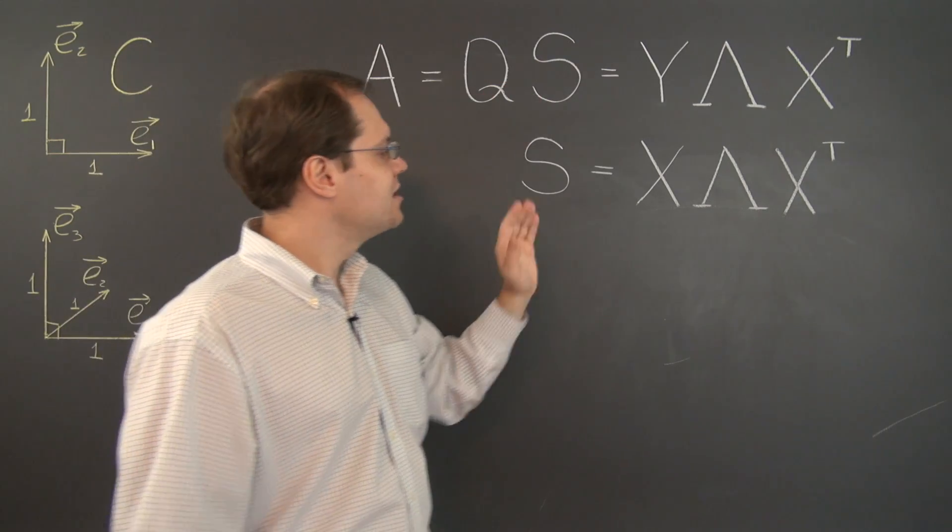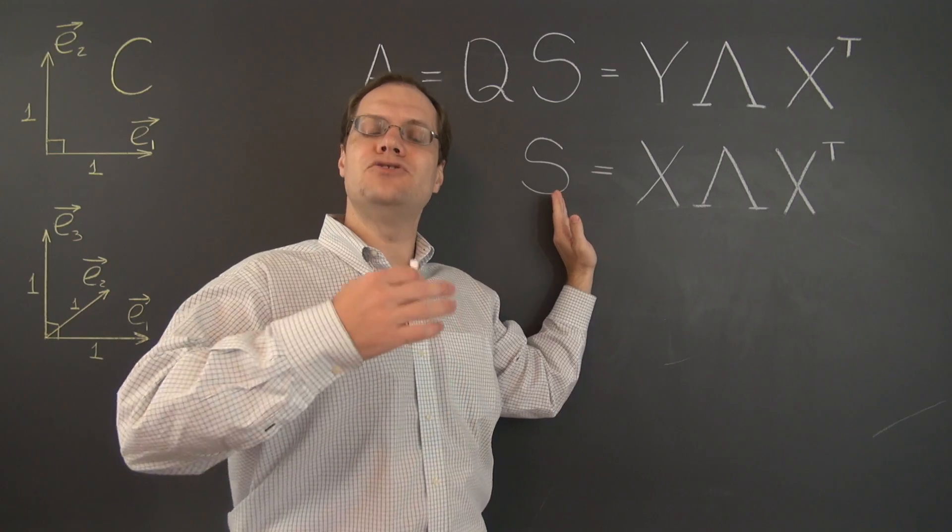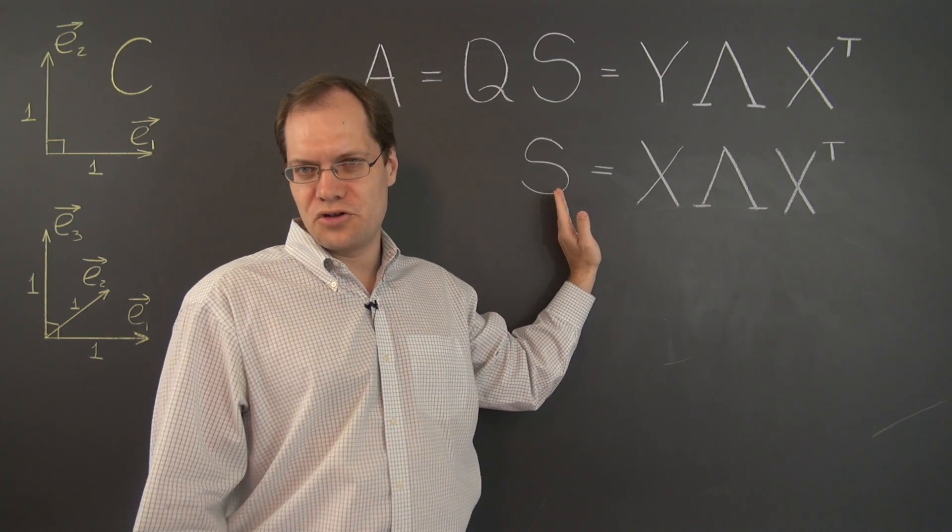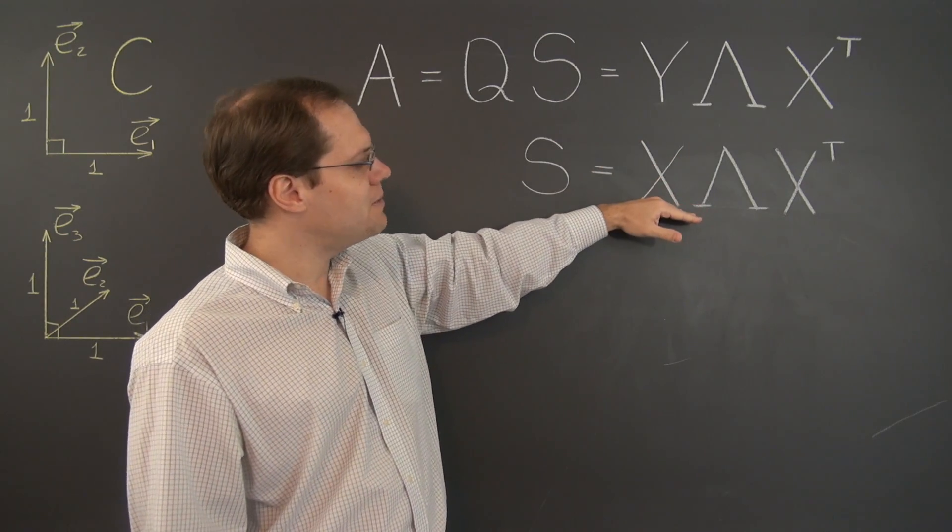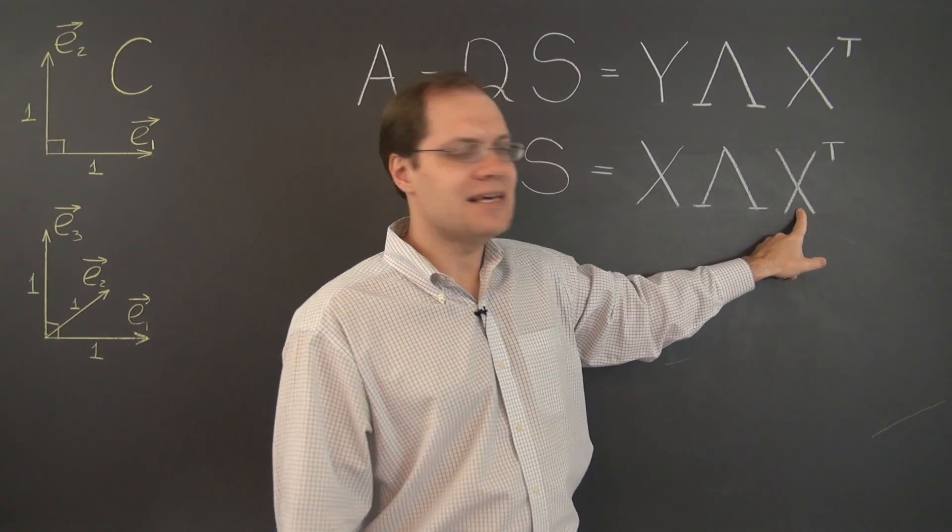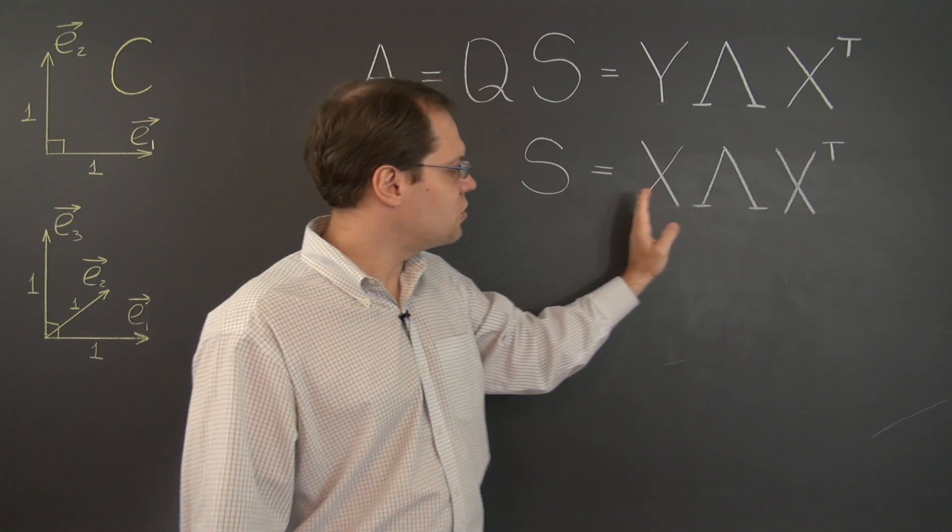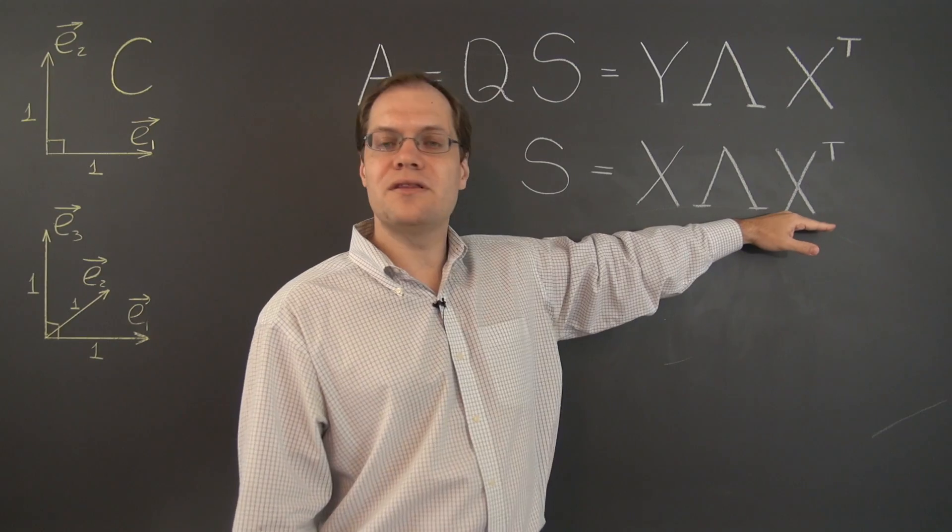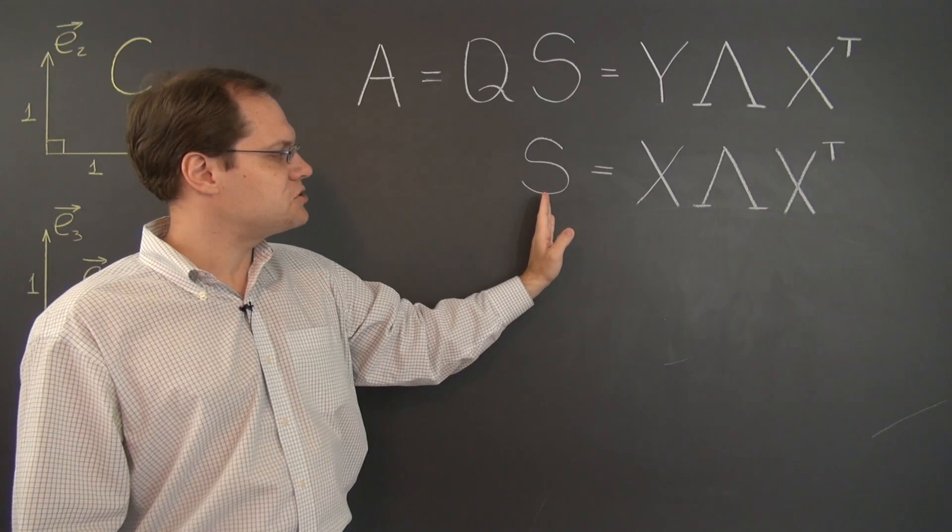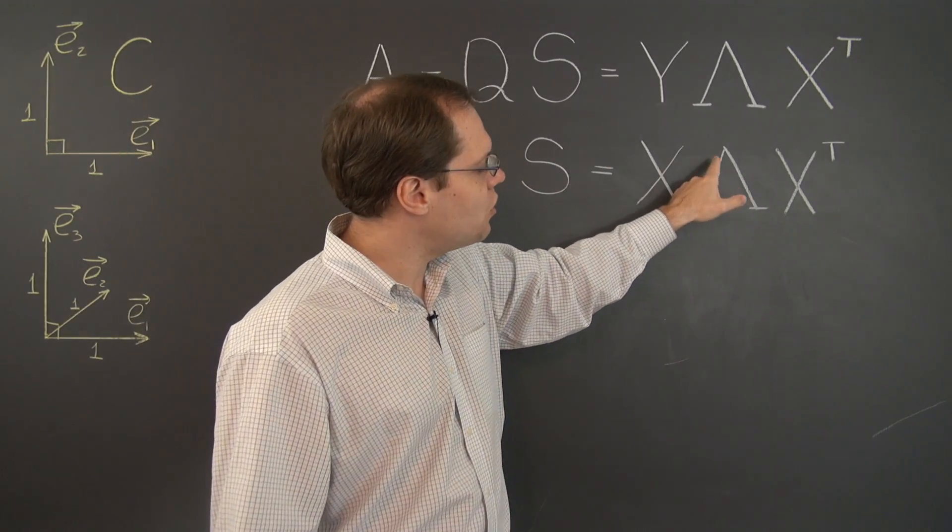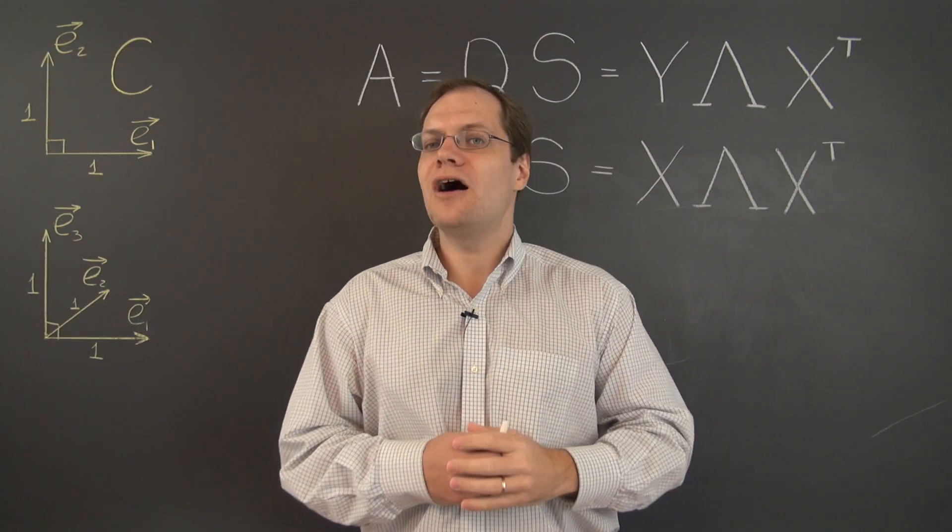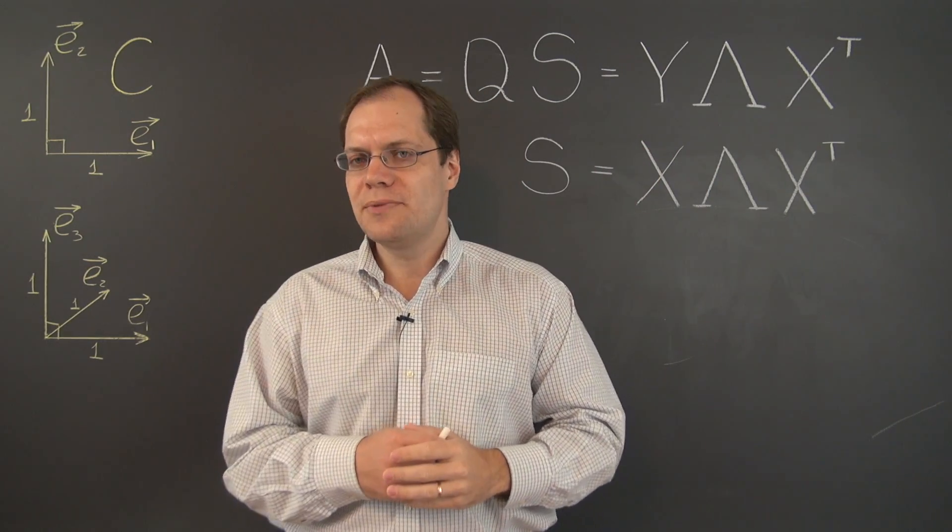And of course, the eigenvectors of S are either orthogonal or can be chosen to be orthogonal. And in fact, they can be chosen to be orthonormal. So when you form the matrix X, it ends up being orthogonal. And its inverse is its transpose. So what we have here is what the eigenvalue decomposition always looks like for a symmetric matrix, except now we also only have non-negative values on the diagonal of the matrix lambda.